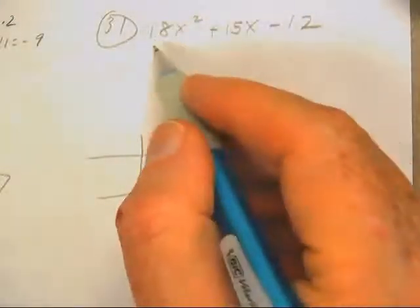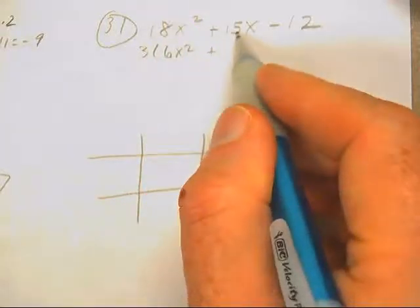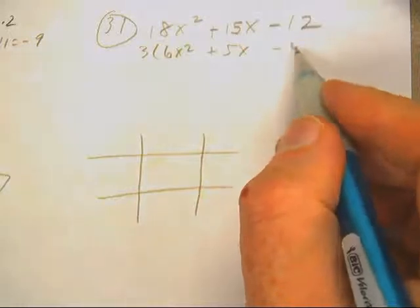Okay, here we go on this one. Notice they're all divisible by 3. 3 goes into their 6. 3 goes into their 5. 3 goes into their 4.